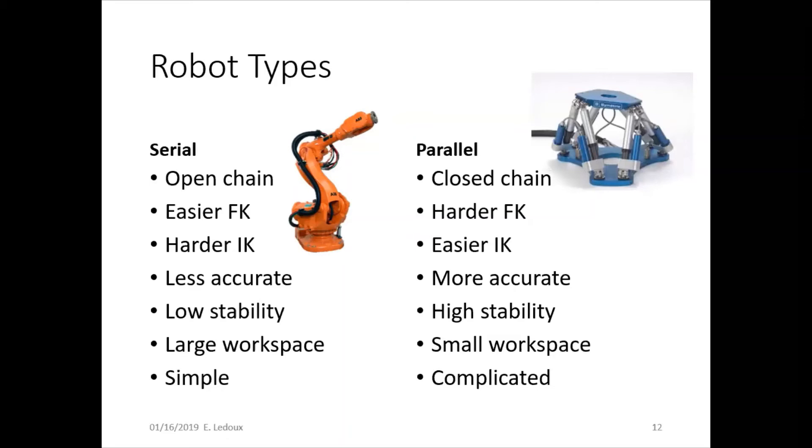There are benefits to both types. Serial robots have easier forward kinematics, which is figuring out where is the tip of the robot if you know the joint positions. And then they have harder inverse kinematics, which is if you know where the tip is, find what the joint values are. The reason for that is because to get to one certain tip pose, you could have multiple solutions to the inverse kinematics, multiple positions that the serial robot could be in.